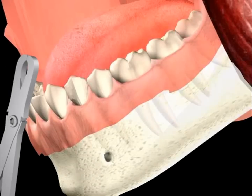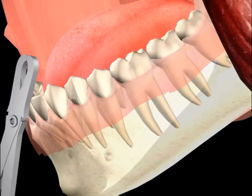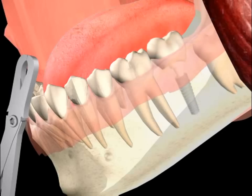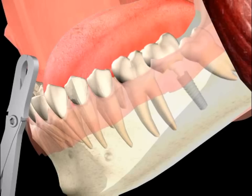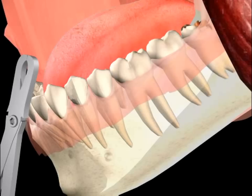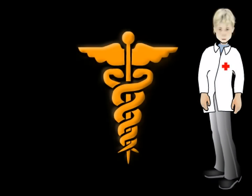Wisdom teeth must be removed if they cause infections, develop a cyst, damage the seventh tooth through their growth, form a weak point in the jaw, endanger a prosthetic provision or make inserting a prosthesis impossible, or are destroyed by deep cavities, or if a good treatment such as a filling or root canal treatment is not possible.